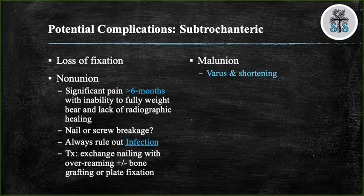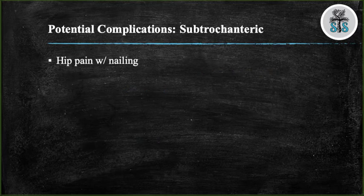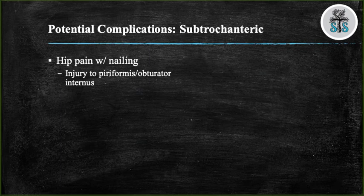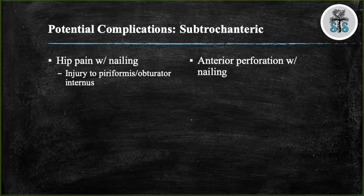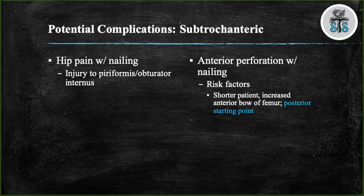Malunion patients may complain of leg length discrepancy, walk with a limp, or have rotational deformities such as their foot pointing in a different direction than the contralateral side. The most common deformity is varus with shortening or flexion. Malunions are defined as shortening greater than 1 cm, 10 degrees of angulation in any plane, and rotational malalignment greater than 15 degrees. Other complications include continued pain with nailing — studies have demonstrated injury to the piriformis and/or obturator internus attributed to continued pain — and anterior perforation of the distal femur, with risk factors including a shorter patient, increased anterior bow of the femur, and a posterior starting point.